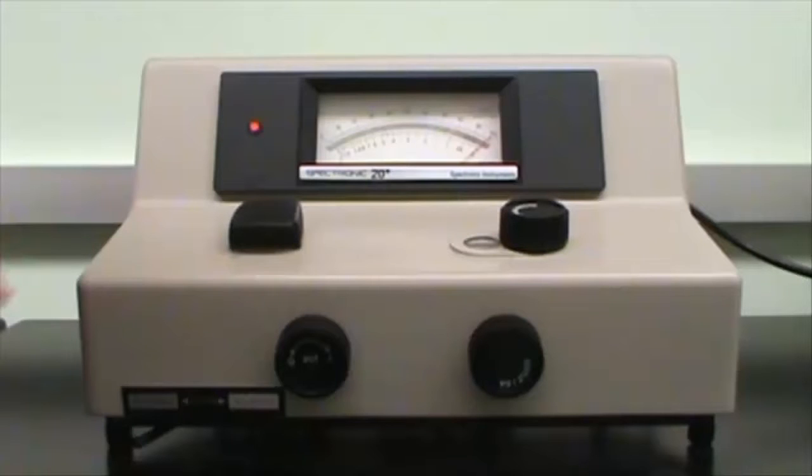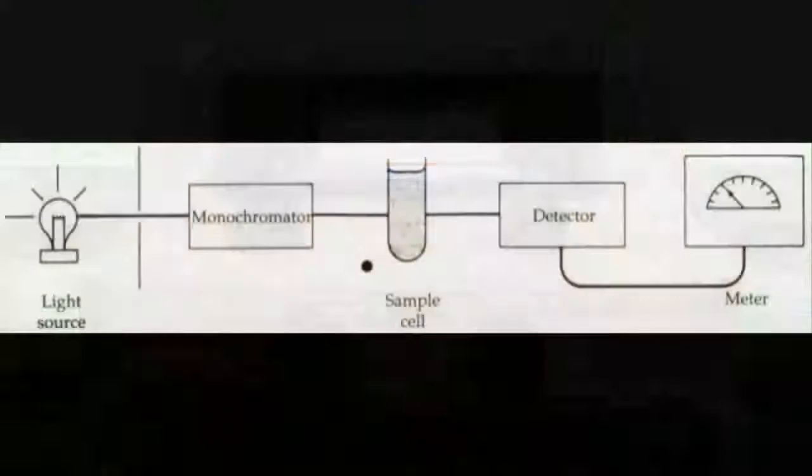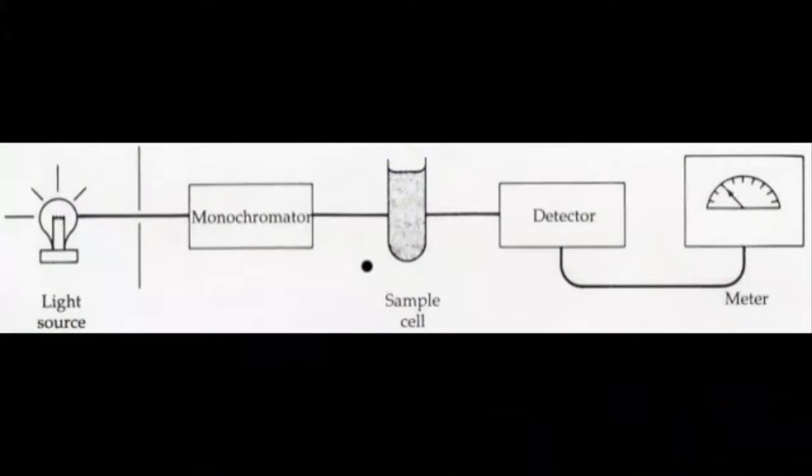We will be using a spectrophotometer called a Spectronic 20 or SPEC20 for short. A spectrophotometer sends light to a sample at a certain color or wavelength. Some of the light is absorbed and some is transmitted. A detector can detect the amount of light transmitted and mathematically show the amount absorbed in a meter.